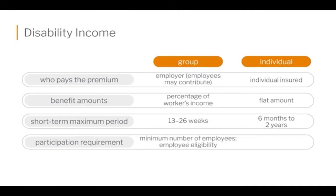Participation requirements: under group coverage, a minimum number of eligible employees must be met or the plan wouldn't be effective. Those types of participation requirements don't apply on an individual policy because you're the only one covered on an individual policy.